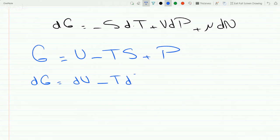so that's minus TdS minus SdT plus product rule on PV, so that's PdV plus VdP.